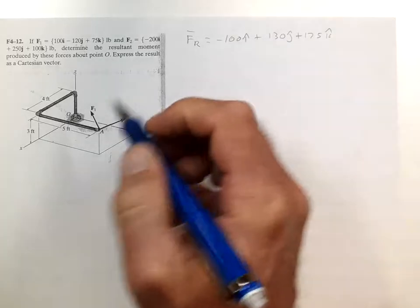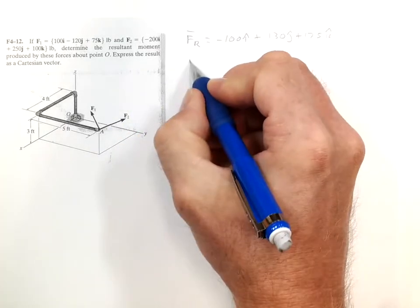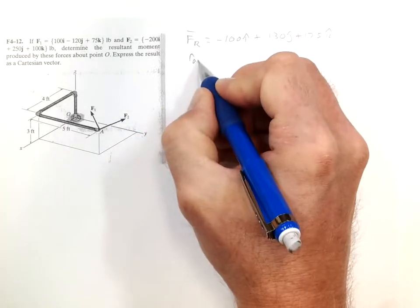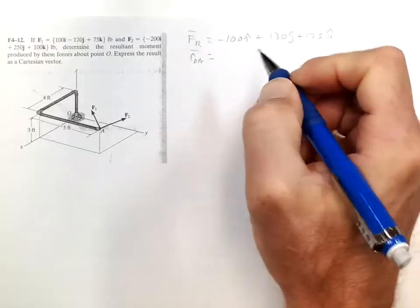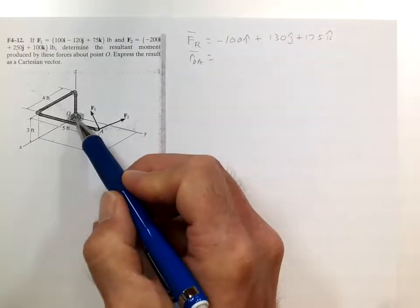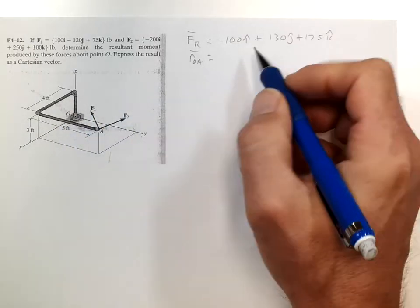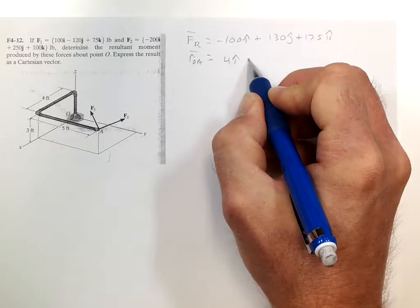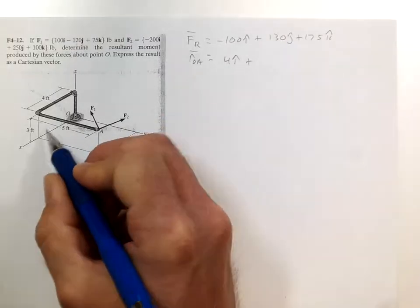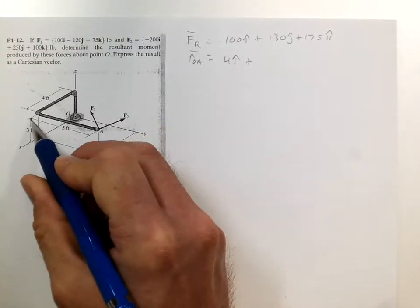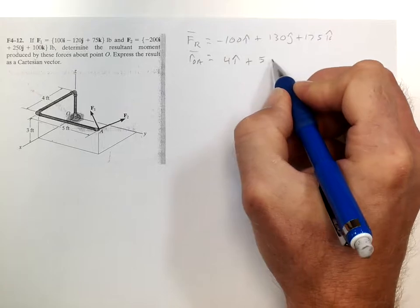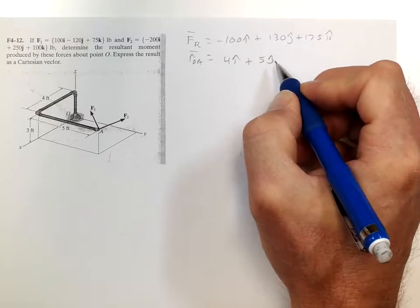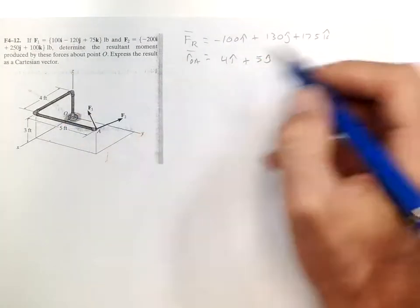The R, so ROA, is 4 in the x, plus 5 in the j, and then 3 in the k.